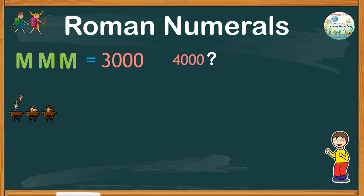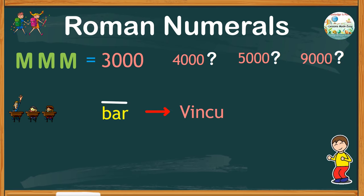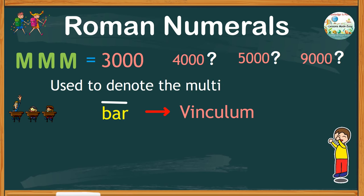But how would you express 4000, 5000, 9000, or other multiple of thousands? This is where you need a bar. A bar is a symbol also known as vinculum. This is used to denote the multiple of thousands.